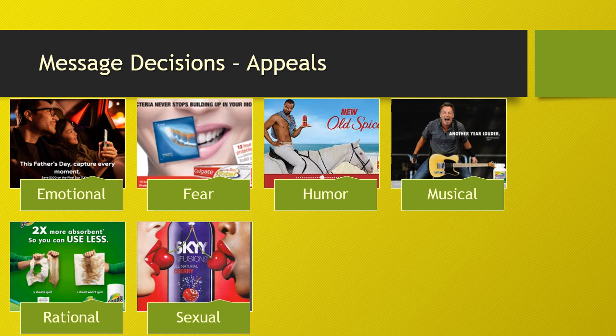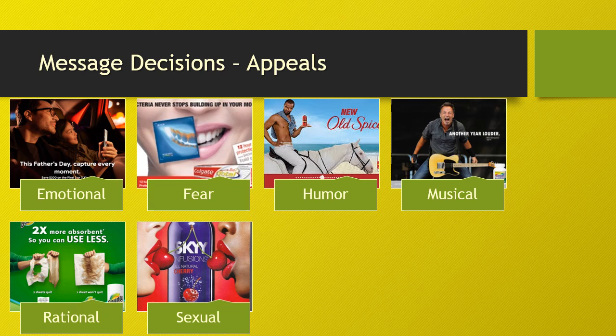Burger King has had many missteps using sexual appeals, including some ads that have been banned. If you've never seen the 2012 Carl's Jr. Paris Hilton ad, which produced more jokes than sales, I strongly recommend you look it up. Their 2014 remake of the ad, which used humor, was much better received. You'll only see the humor in the 2014 ad if you've watched the 2012 Paris Hilton one first.